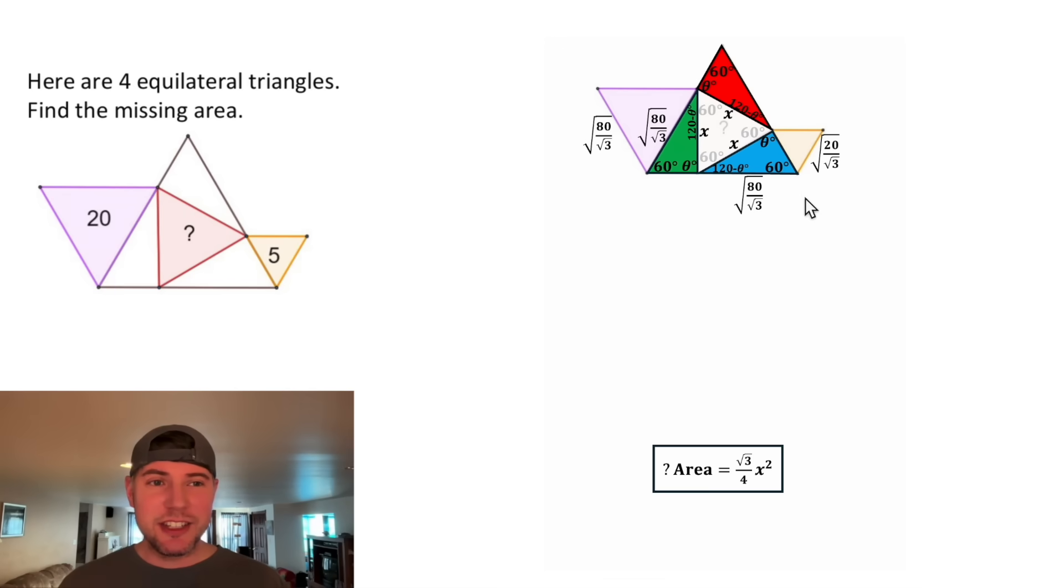Next, let's look at this yellow triangle. This side will be the same thing as this side. So this is also going to be that square root. Now we know quite a bit about this blue triangle. Let's copy it down here.